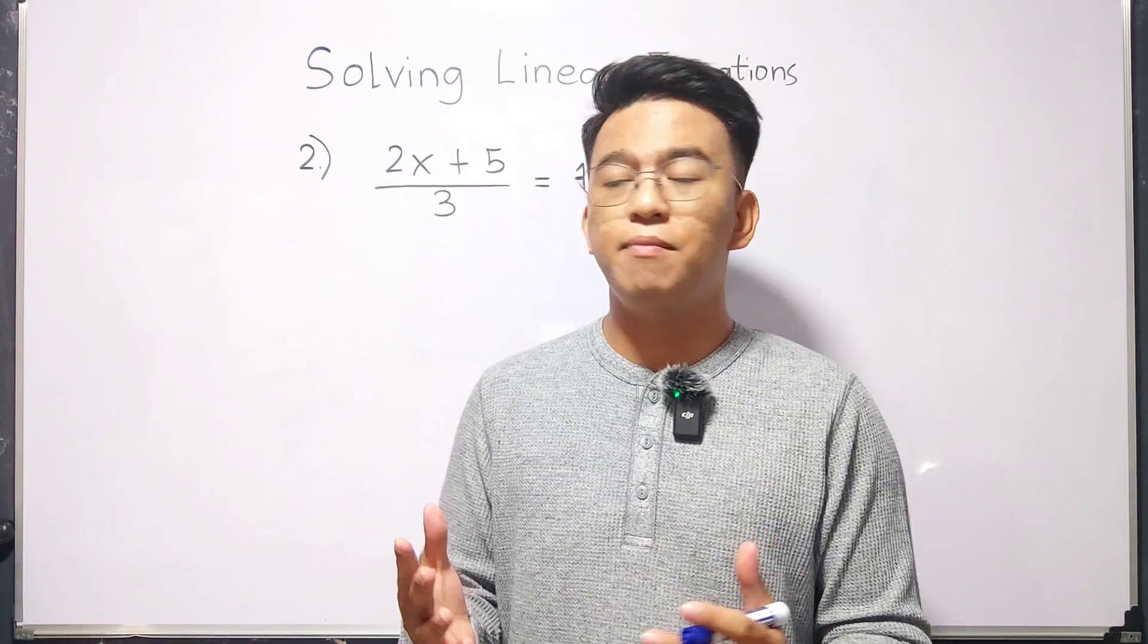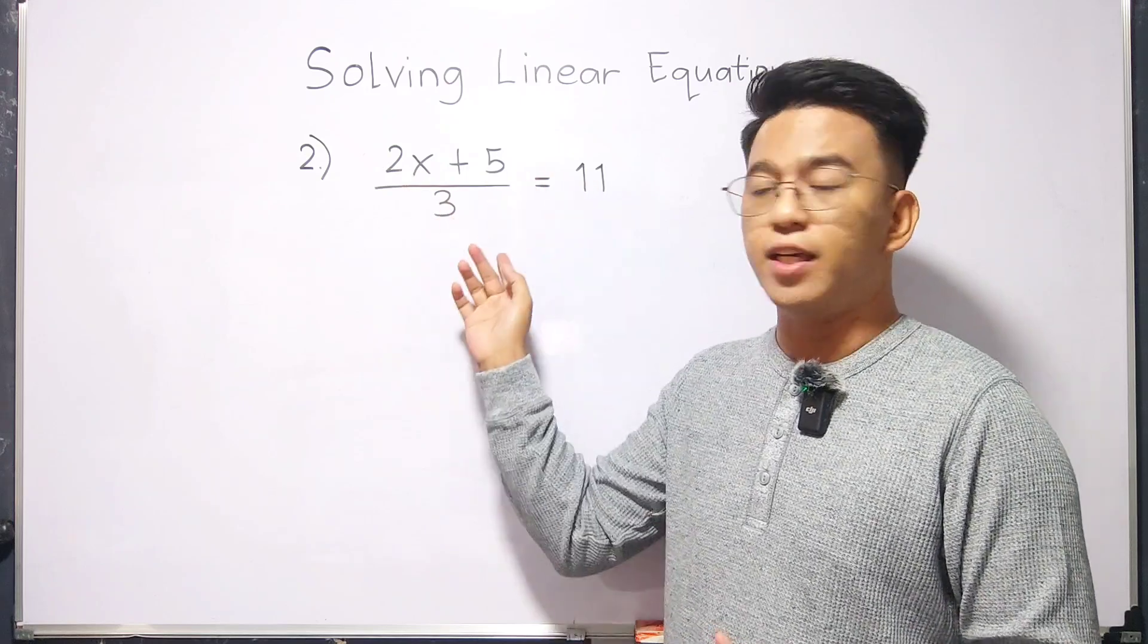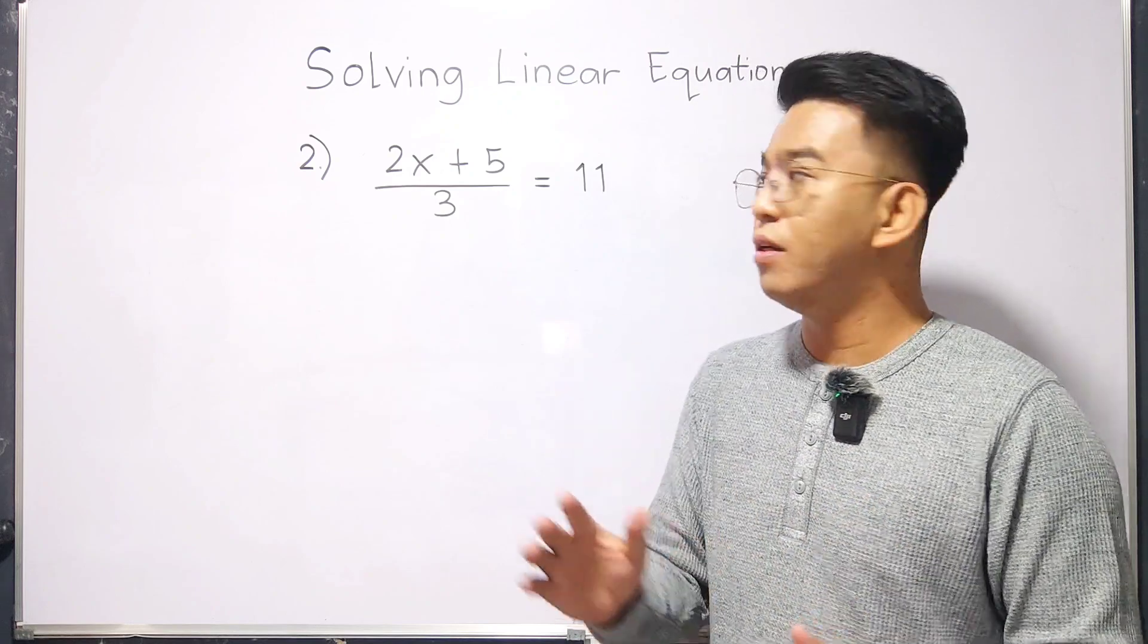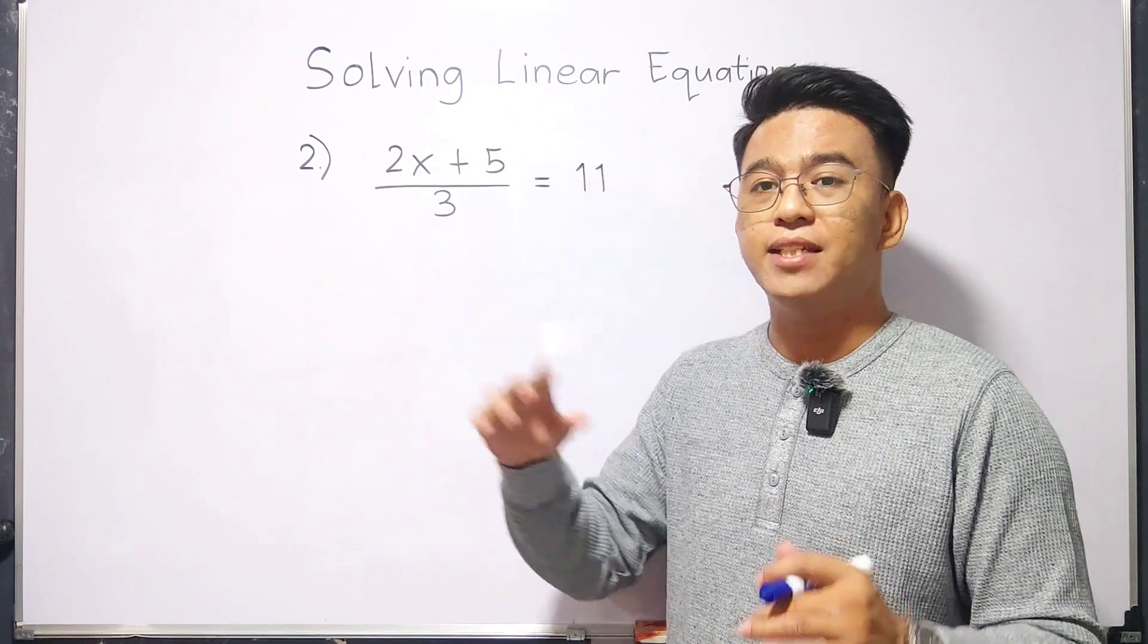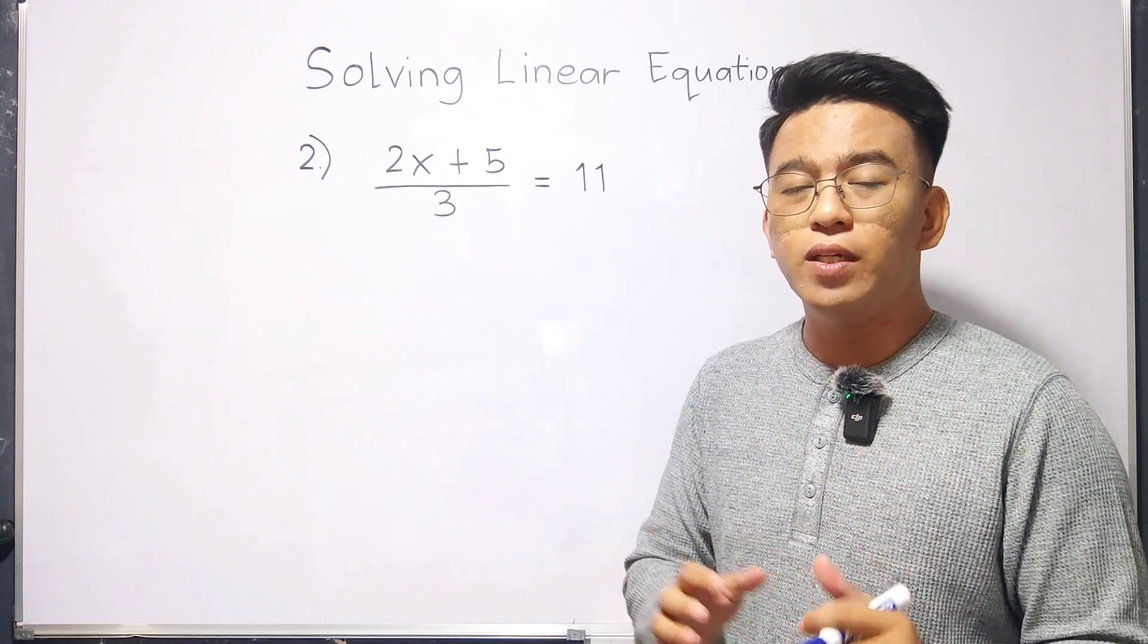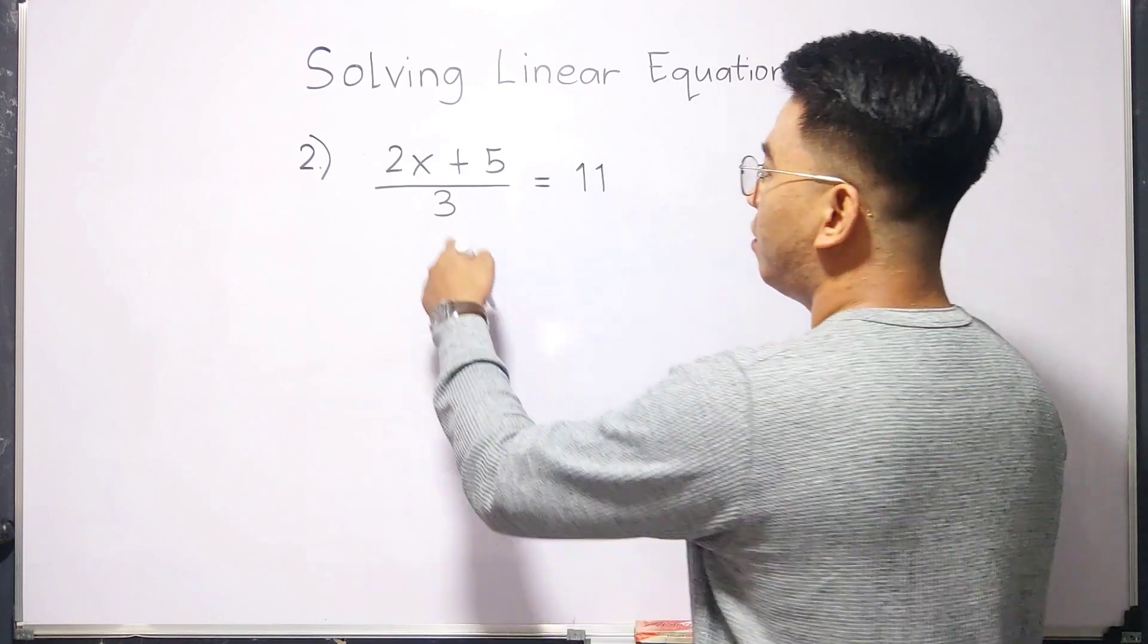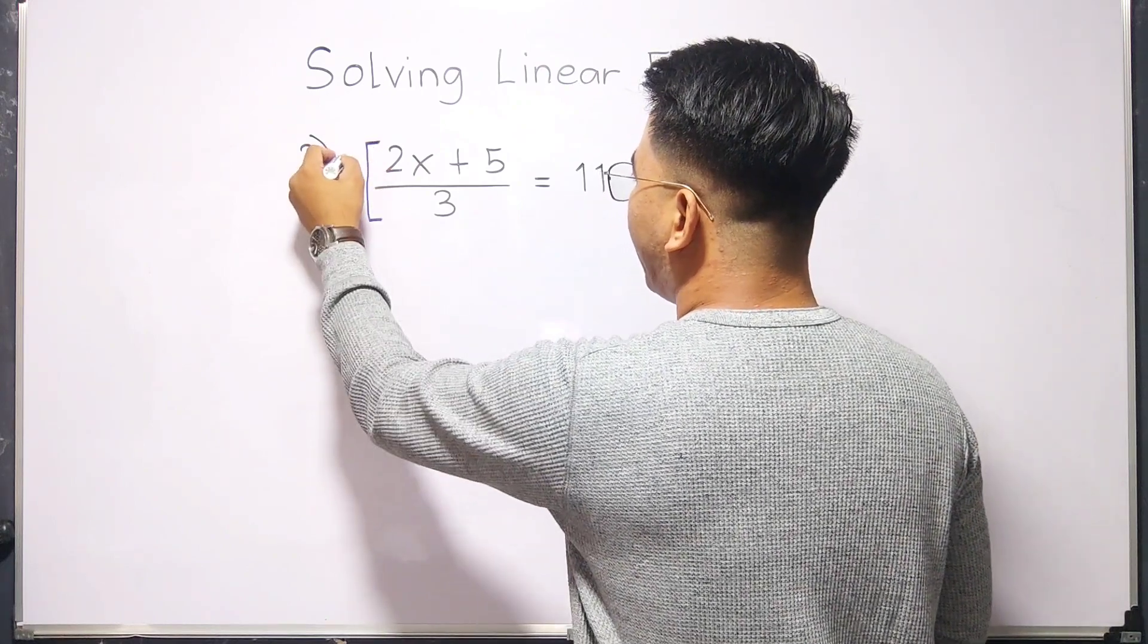Now, let us solve the second example, wherein we have here 2x plus 5 over 3 is equal to 11. Now, this one is quite different from the previous example, because one of the sides of the equation is a fraction. So, basically, in this kind of problem, what we need to do is to simply remove first the denominator to make our equations look easier. So, to remove this one, we will multiply the whole equation by 3.